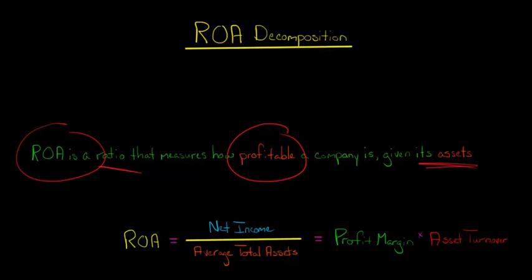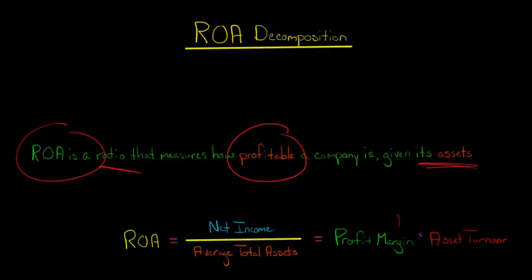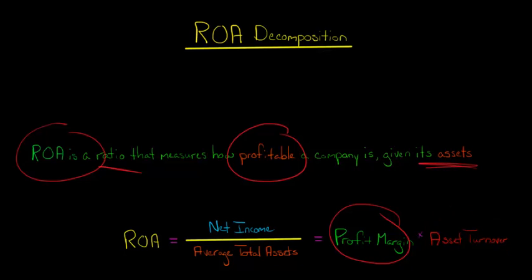Another way of thinking about ROA is that it's equal to a company's profit margin times its asset turnover. Profit margin is the company's net income divided by net sales, and asset turnover is the company's net sales divided by average total assets.